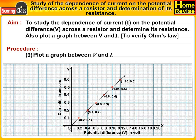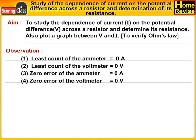Plot a graph between V and I. Observations: Number one, least count of the ammeter is... Least count of the voltmeter is... Zero error of the ammeter is... Zero error of the voltmeter is...